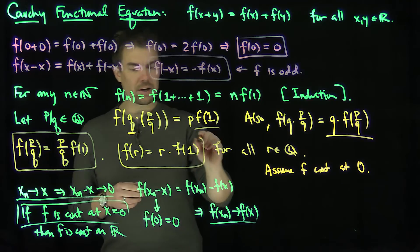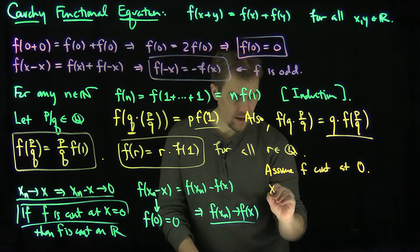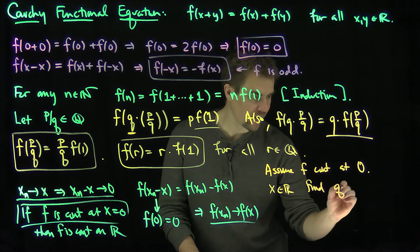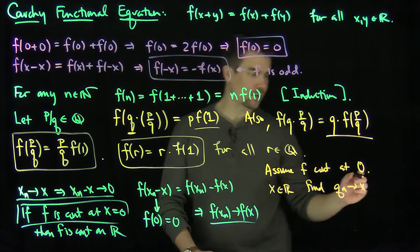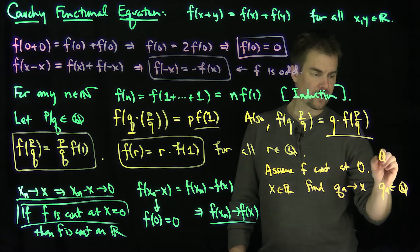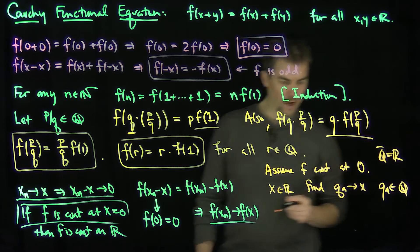And I can use this relationship over here, so I can let x be any real number, and I can find a sequence of rational numbers, q_n, which converges to x, q_n in Q, because the rationals are dense. This is because the closure of the rationals is just the whole real line.